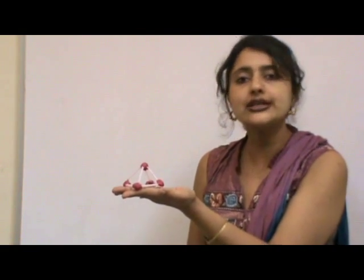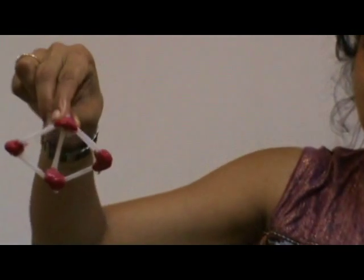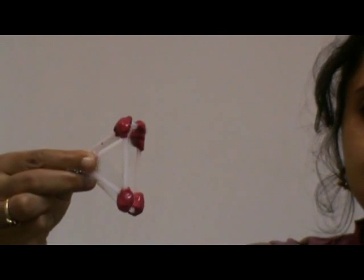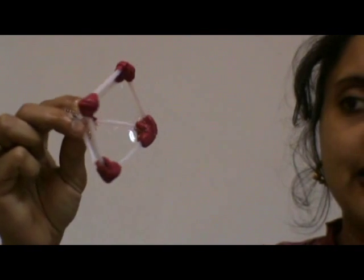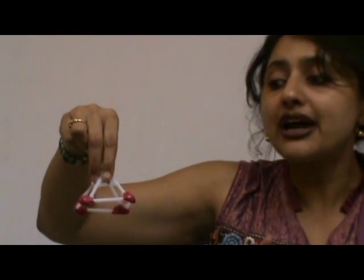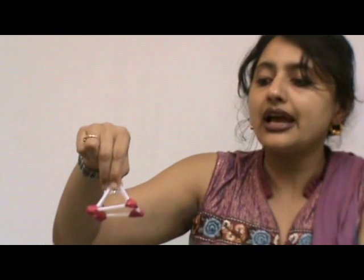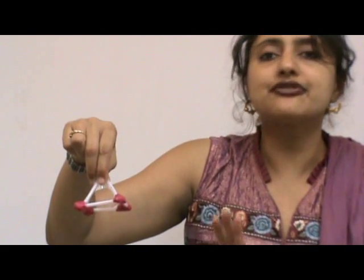This is a square pyramid. I am going to dip it in the soapy solution. The bubbles form on all the faces. It has five faces. If you count the number of straws used, they are eight — those are the edges. And the clay pieces are five. So a square pyramid has five faces, eight edges, and five vertices.